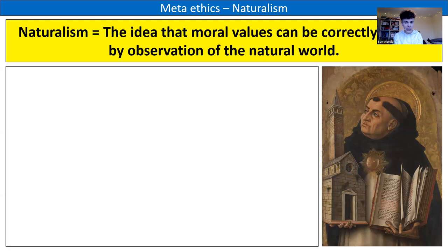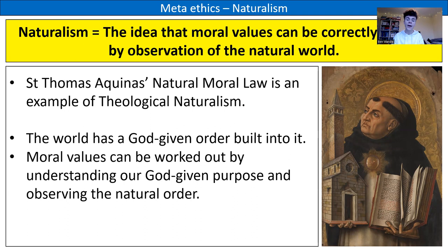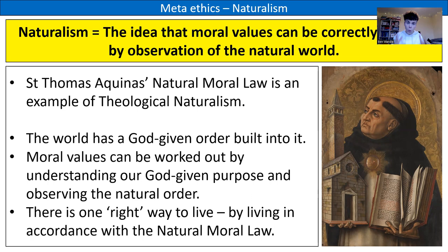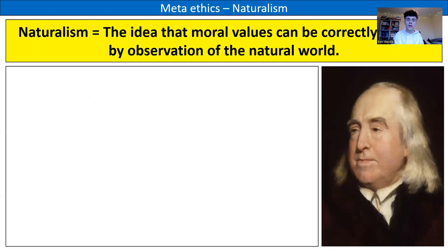Let's have a look at some case studies. Thomas Aquinas — his natural moral law is an example of theological naturalism. It's based on the idea that the world has a God-given order built into it, so moral values can be worked out by understanding our God-given purpose and observing the natural order. This leads to the idea there is one right way to live — by living in accordance with the natural moral law. His five primary precepts are not subjective; using right reason in accordance with nature, we will all discover them. It's a moral absolutist approach.